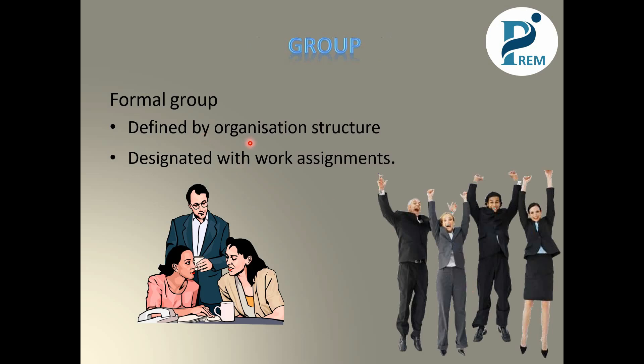A Formal Group is defined by the organization structure, designated with work assignments. The organization is one of the structures of your work. There is a designation for you — if you are a team leader, executive, employee, trainee, or just an executive. This is your designation, and you get work assignments accordingly.